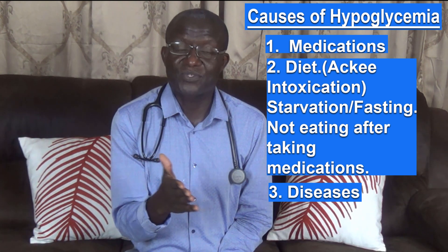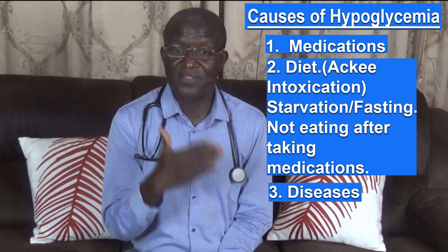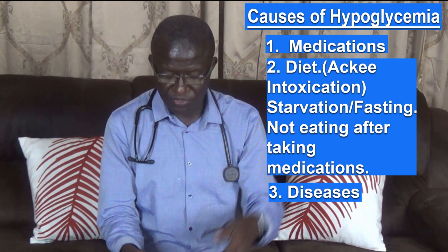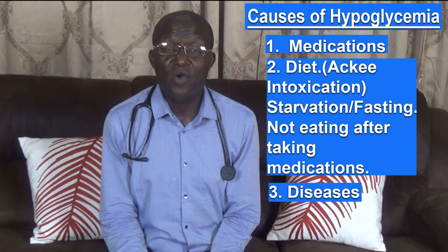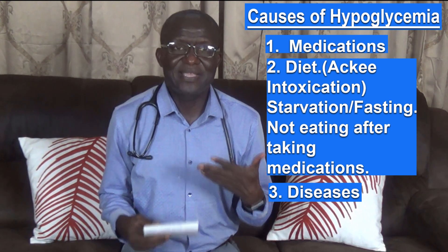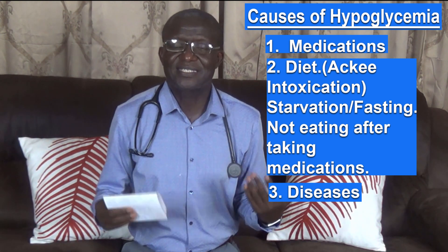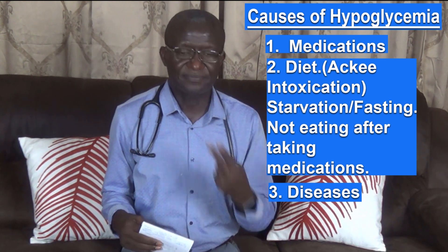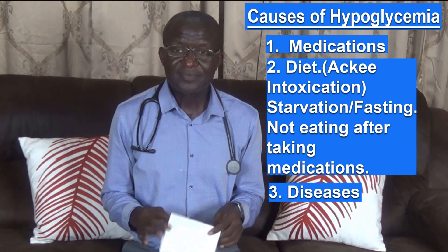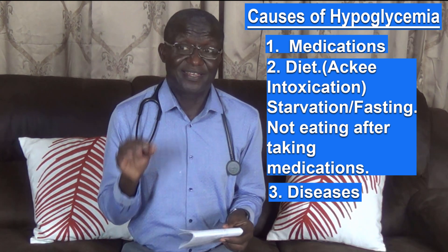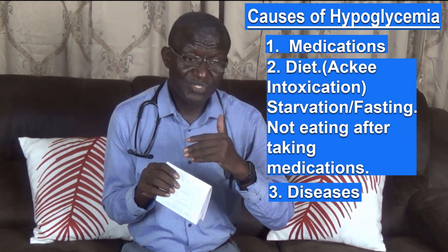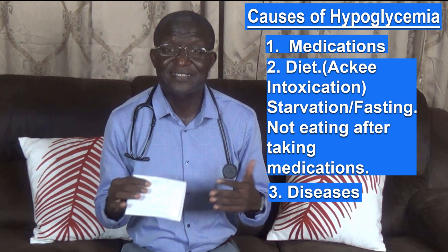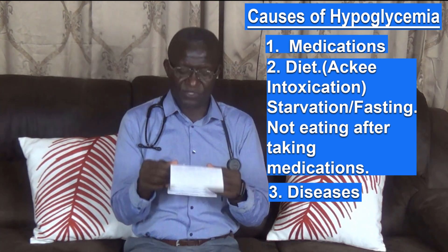Insulinoma is a cancer that produces a lot of insulin. So your own pancreas is producing insulin and on top of that there is a cancer also producing insulin — that will lead to hypoglycemia. Renal failure can also lead to hypoglycemia. Bulimia nervosa — a mental disorder where people eat a lot and then induce vomiting — and anorexia nervosa — where people severely restrict the amount they eat to lose weight — can also lead to hypoglycemia.